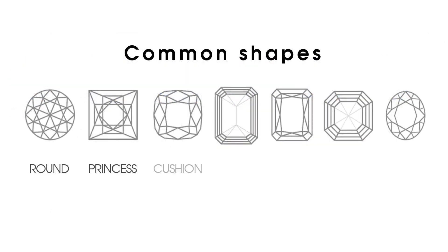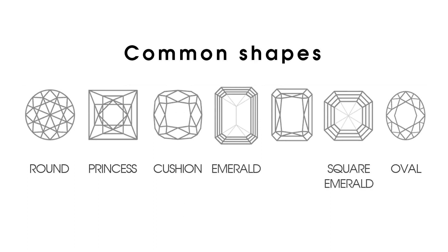Rounds, princess, cushions, and ovals are brilliant cuts with kite-shaped facets designed to promote vivid sparkle and contrast. Emerald and square emeralds are step cuts with long flat facets and a hall-of-mirrors effect when looking into the stone. The radiant is a mixed cut combining the brilliant style of faceting on the bottom with step cut faceting on the top.